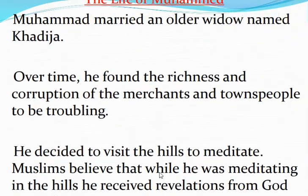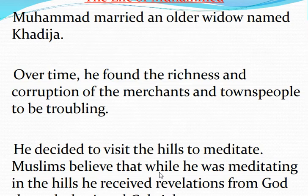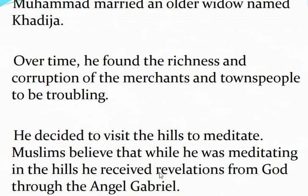So the life of Muhammad: Muhammad married an older widow named Khadija — his wife's name was Khadija. Over time he found the richness and corruption of the merchants and townspeople to be troubling. Ab hum discuss karenge kaisa religion create hua — pahle Muhammad ek merchant the, phir politics mein ghuse, political situation ko bhi control kiye, aur usi samay mein yeh religion ko nikala jo aaj famous Islam, matlab Muslim religion hain.